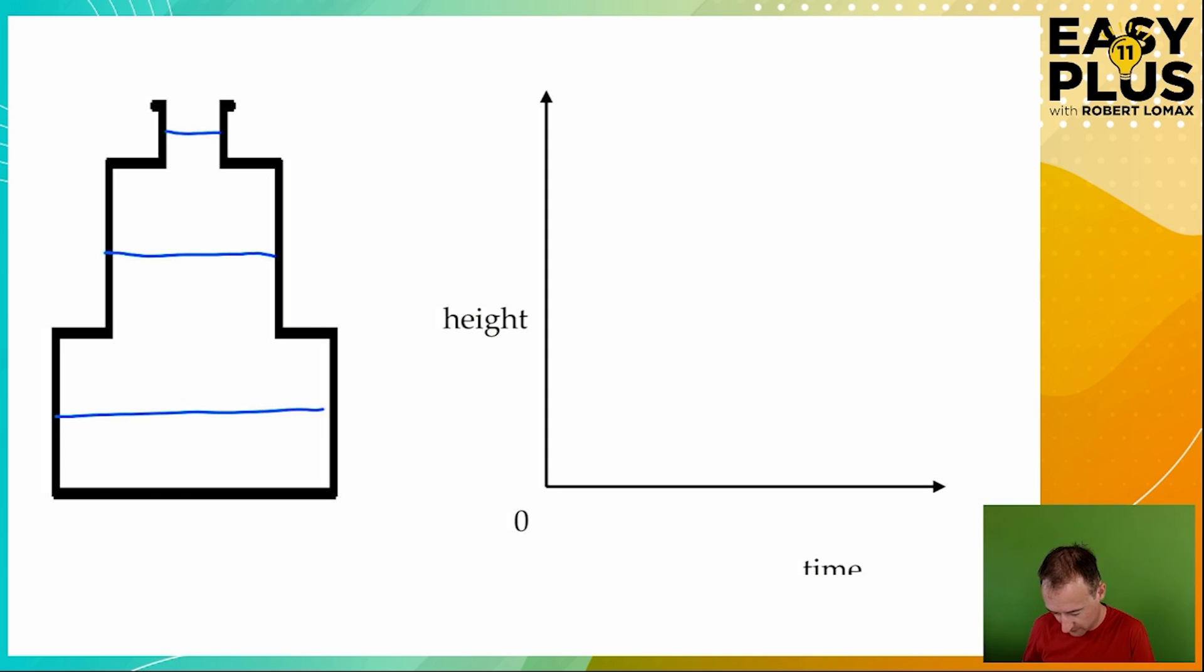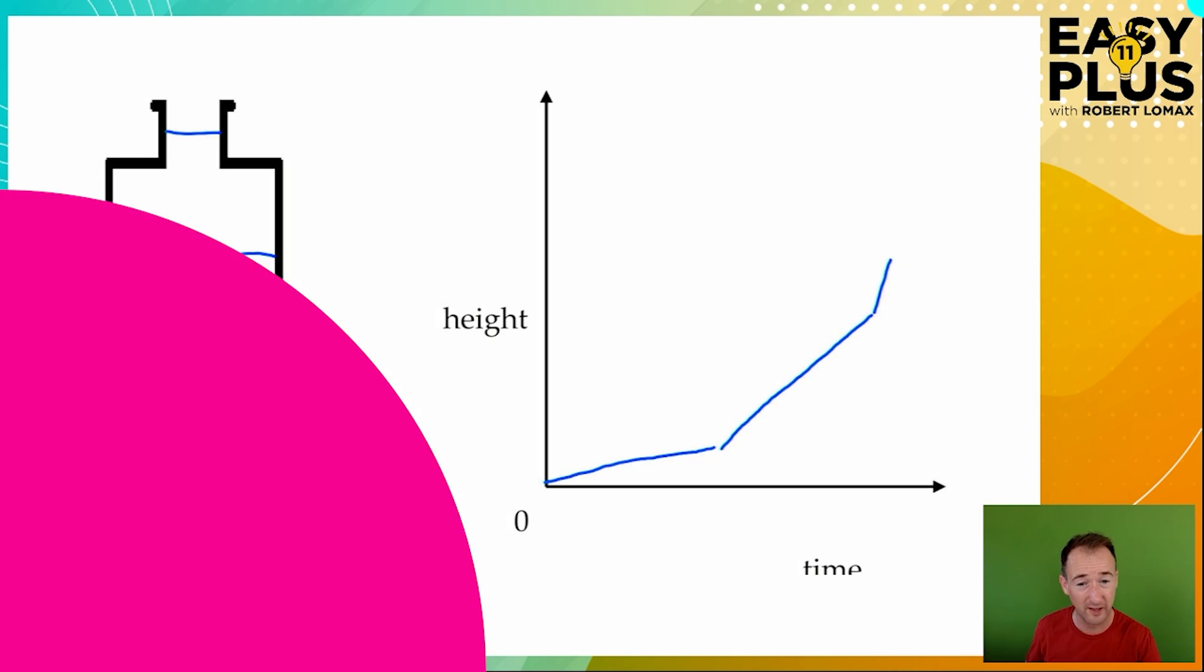So we start off with this down here. So that's the slow increase for the bottom section. Then we have a faster increase for the middle section and then we rather quickly fill up the top part there. It's as simple as that.